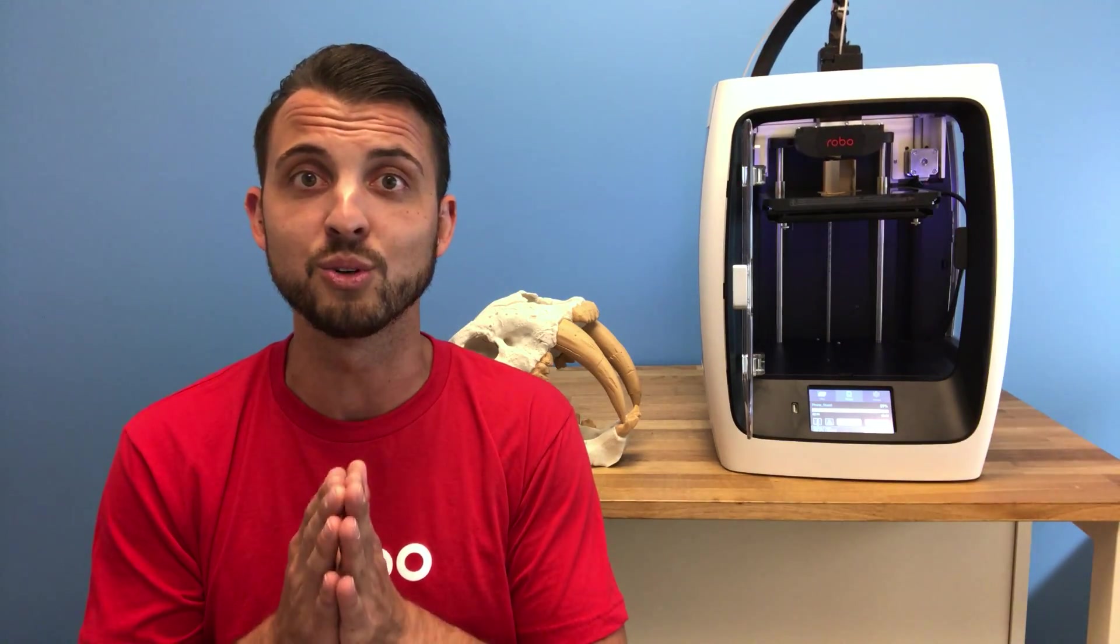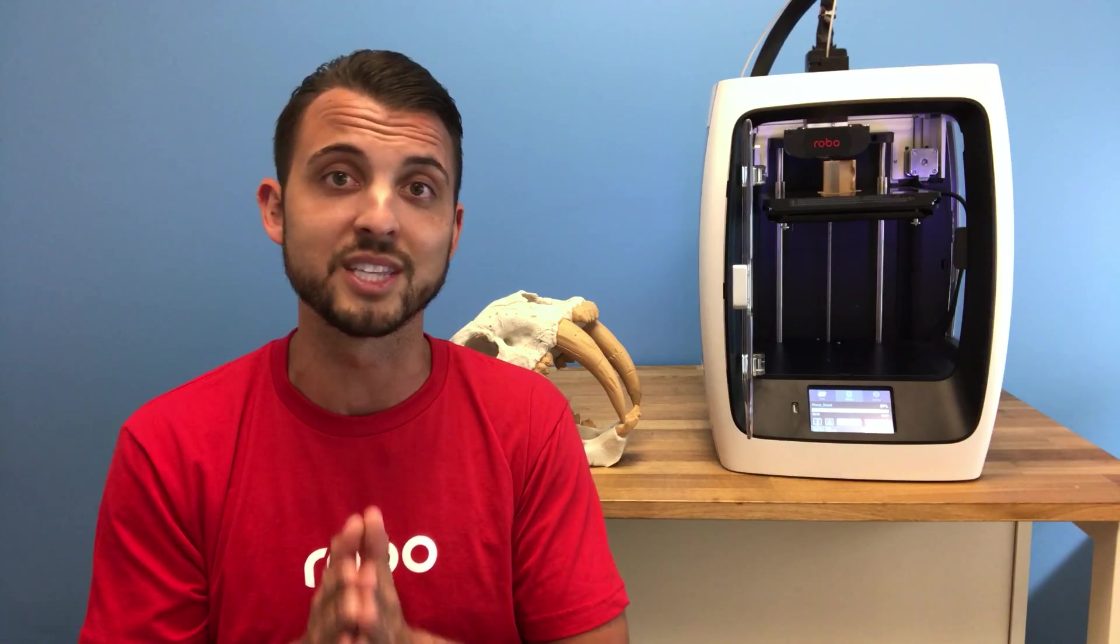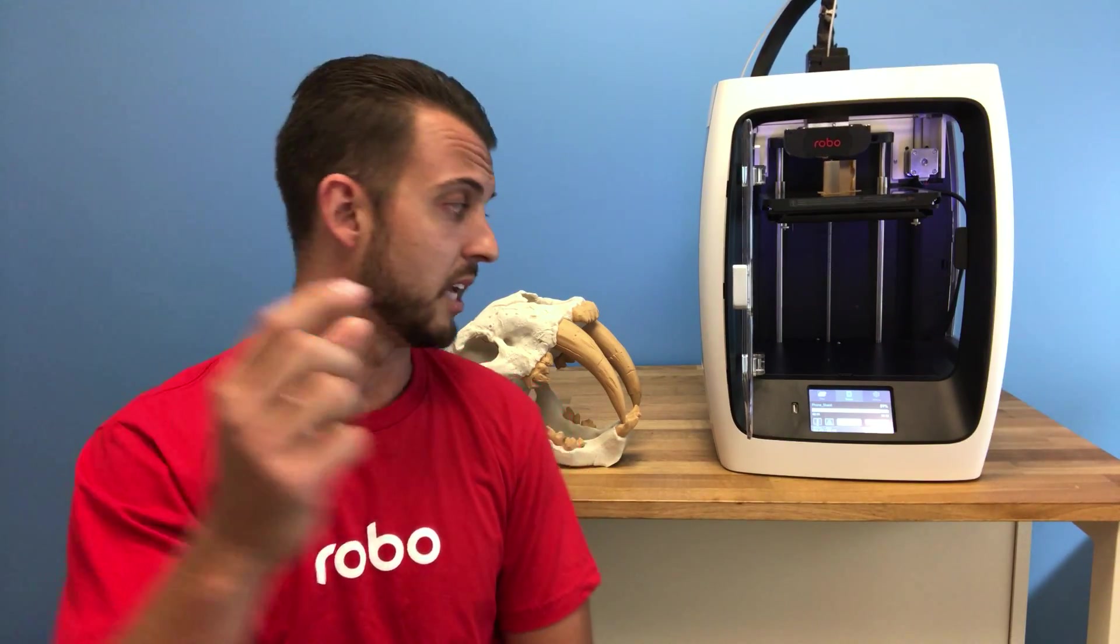One of the cool things that we have that is very unique with our product is we have something called onboard slicing. So for all you 3D printing enthusiasts out there, you know what I'm talking about. What this means is it allows you to go on any of the marketplaces that have free models like this actually back here. You can download it onto a thumb drive and you can plug it into the printer, go through a few settings and press print. You don't need to learn and understand complicated software. We just want to get you printing quickly and easily. That's our goal here.